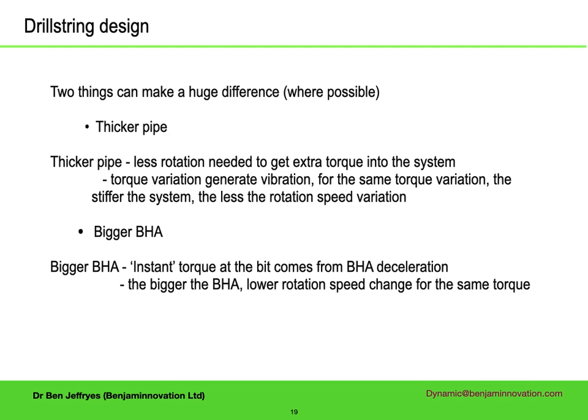The role of drill collars in the BHA is normally thought of as providing weight on bit, but they also stabilise the rotation of the bit. There are other considerations in deciding collar size — annular pressure drop and rig handling — but if you are in a big hole, say 12.25 inch or above, don't just use 8.5 inch collars; use the biggest ones you can. The moment of inertia goes as radius to the fourth power, so even a small increase in outer diameter can make a substantial difference. I would really love to see what happens with really heavy collars — ones filled with tungsten powder have been proposed but, so far as I know, never used.